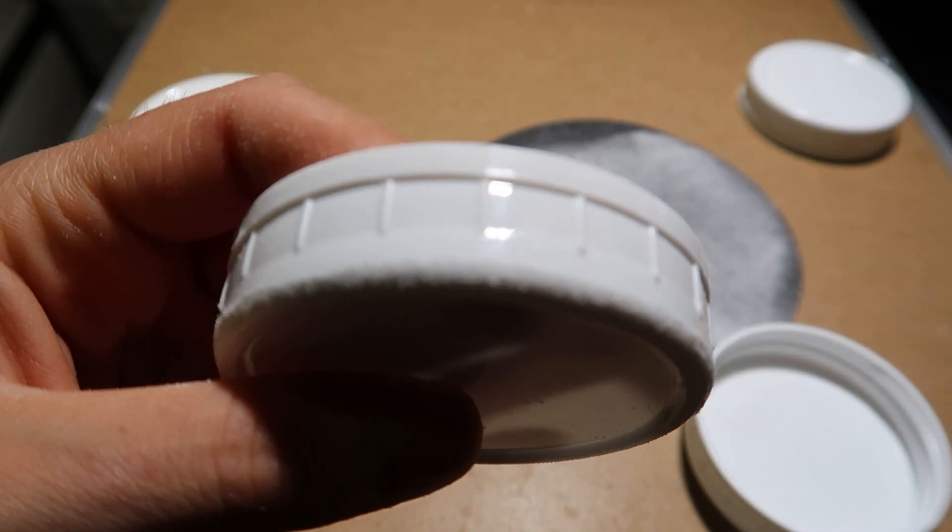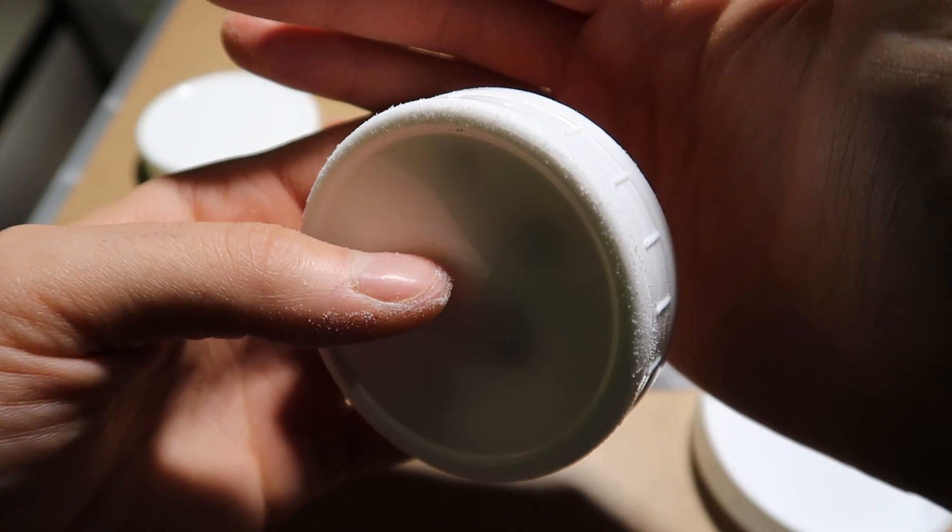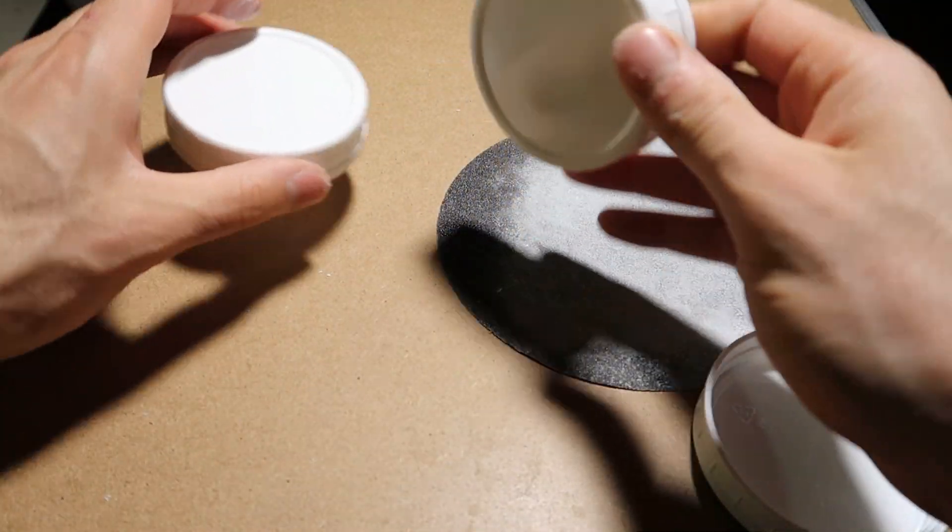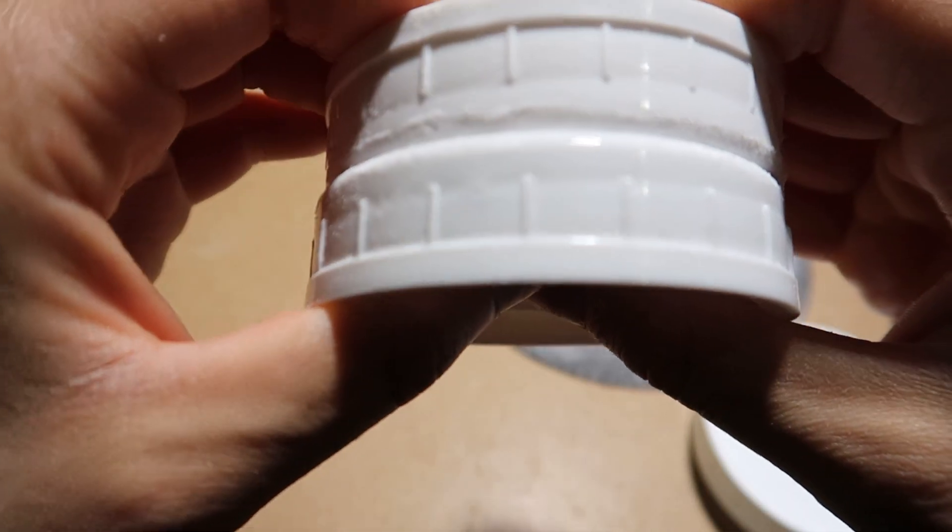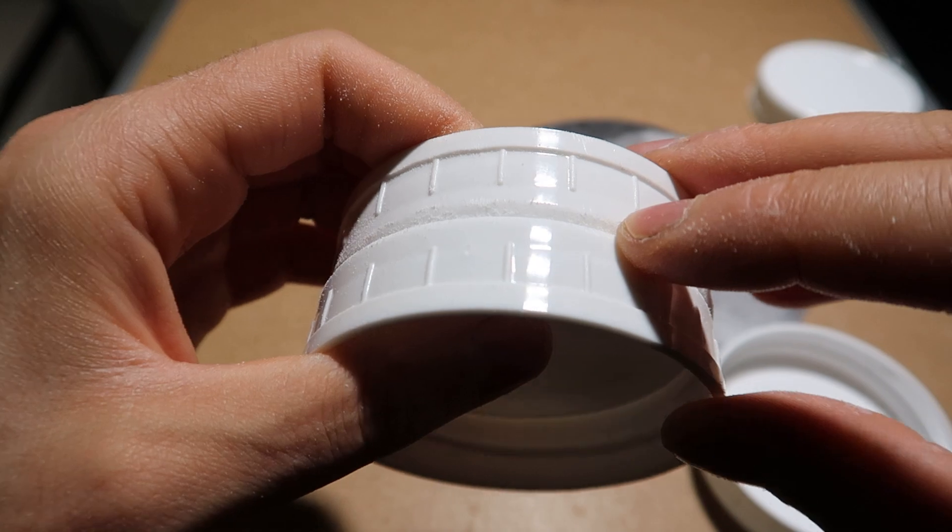So you're going to sand around the edges and around the exterior rim too. See how it's a little bit higher than just the base. Make sure we got good adhesion between the plastic when we go through and weld it.